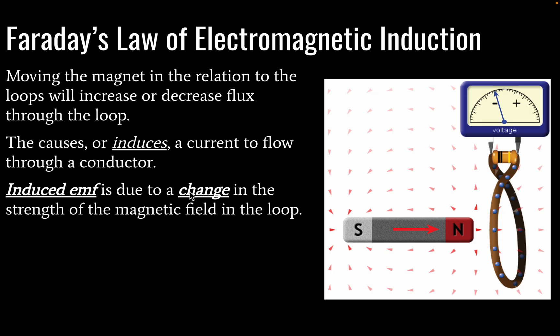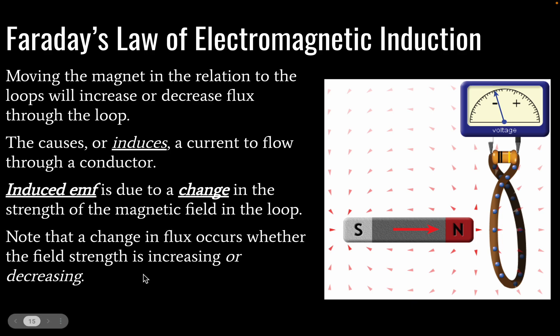So our induced EMF is due to a change in the strength of the magnetic field, we have to have a change. If we have no change, no relative motion between our magnet and our loop, then we have no induced current, no induced EMF, nothing is happening.